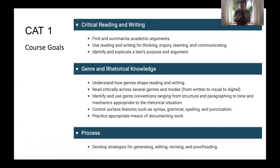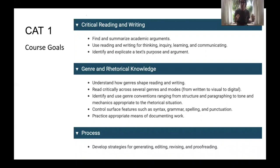CAT 1 is really critical reading focused. We're thinking about summarizing academic arguments, thinking about genre and rhetorical knowledge — how do you understand how genres shape your experience of reading and writing and your expectations surrounding a particular text. And then process: starting to think about writing as a process and developing strategies for generating ideas, editing, revising, and proofreading.